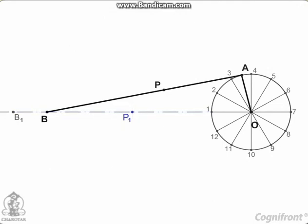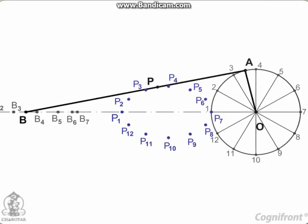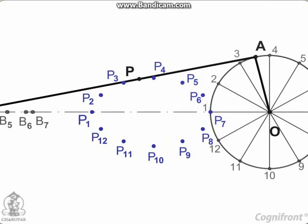Obtain other points in similar manner. Then, draw a smooth curve through these points. This curve is the locus of point P.